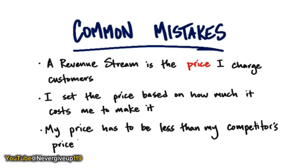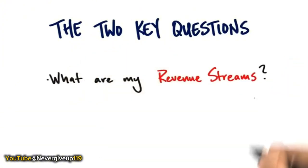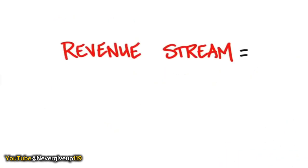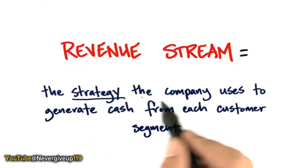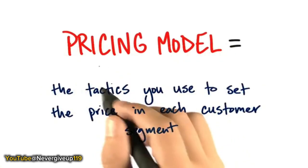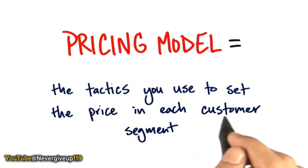All this depends on your knowledge about customers, their reaction to the value proposition, and all the work you've been doing outside the building. You're going to have an incredible advantage in thinking about revenue and pricing. The two questions we'll address are: what are my revenue streams, and within those streams, how do I price the product? A revenue stream is the strategy the company uses to generate cash from each customer segment. Pricing are the tactics you use to set the price — how many dollars, pounds, or whether it's free — in each customer segment.